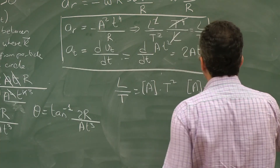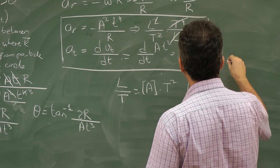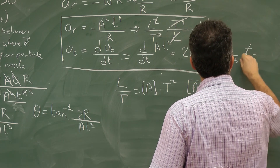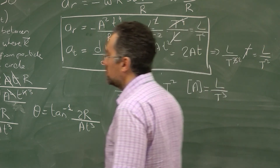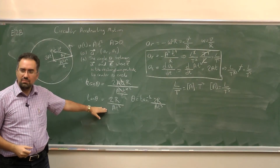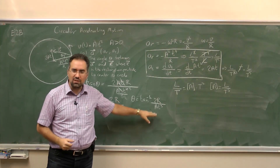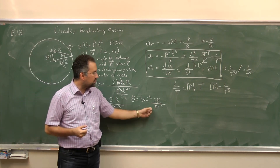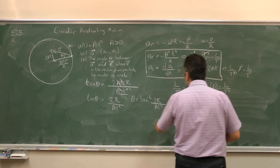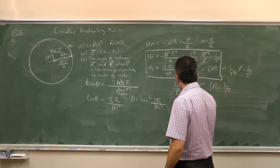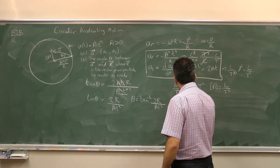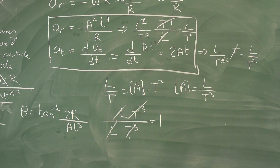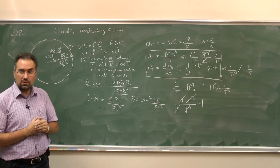For the arctangent, the argument of any transcendental function must be dimensionless. In 2r over (at cubed): the numerator is length L, and the denominator is a — which is L over T cubed — times T cubed, giving L. Everything cancels to give 1, which is dimensionless. So it makes excellent sense. That is the answer to this problem.